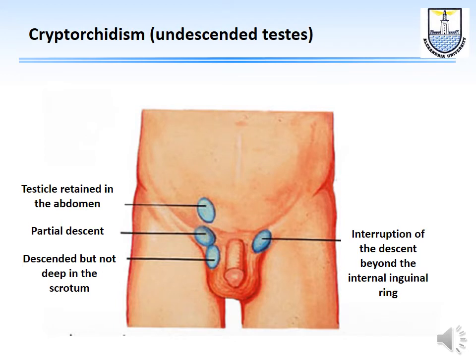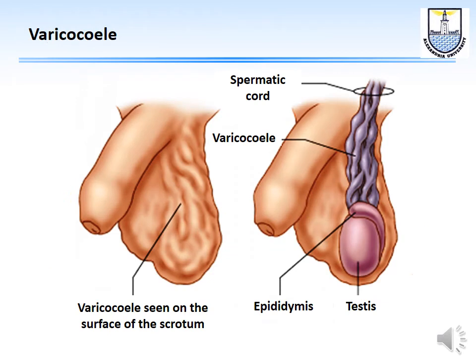Cryptorchidism — undescended testes — is another cause of male infertility. The testis can be arrested at different levels: retained in the abdomen, partially descended, descended but not deep in the scrotum, or with interrupted descent beyond the internal inguinal ring. Varicocele is another cause, visible on the surface of the scrotum or detectable only by ultrasound Doppler studies.